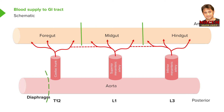At T12, at L1, and at L3 — these vertebral levels — we have the celiac trunk, the superior mesenteric artery, and the inferior mesenteric artery respectively. Looking at the gastrointestinal tract, we can see that the GI tract is split into foregut, midgut, and hindgut.